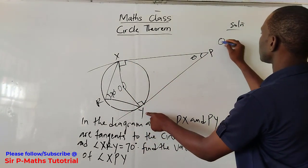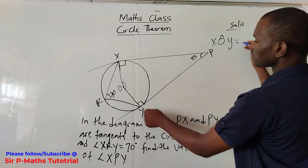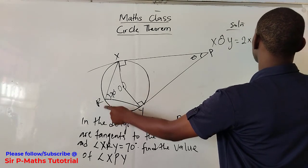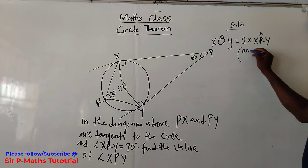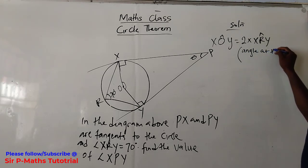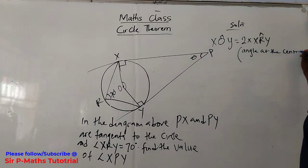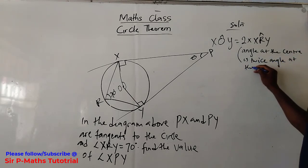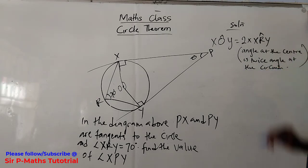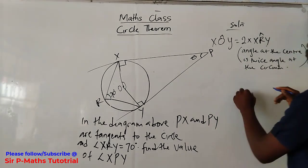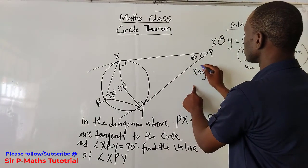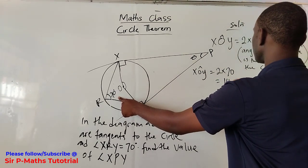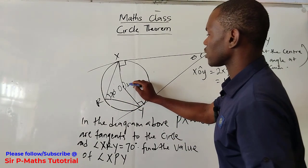Let me call the center O. Angle XOY is equal to two times angle XRY. The reason: the angle at the center is twice the angle at the circumference. So XOY equals two times 70, which gives me 140 degrees.